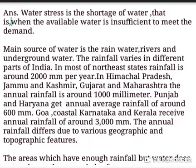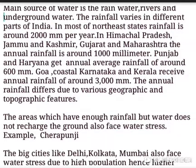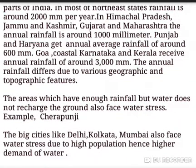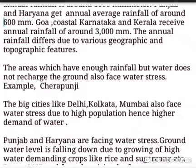The main sources of water are rainwater, rivers, and underground water. Rainfall varies across different parts of India. In most northeastern states, rainfall is around 2,000 mm per year. In Himachal Pradesh, Jammu and Kashmir, Gujarat, and Maharashtra, annual rainfall is around 1,000 mm. Punjab and Haryana receive an average of around 600 mm annually, while Goa, coastal Karnataka, and Kerala receive around 3,000 mm per year.